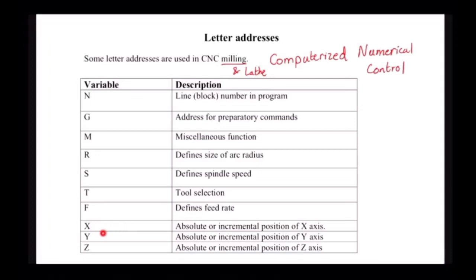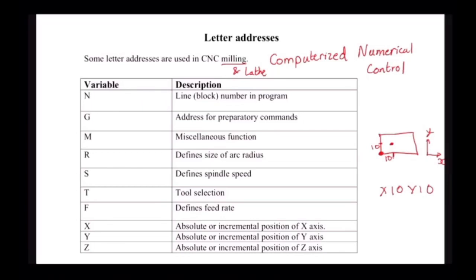The last three commands are X, Y, and Z. This is to change any position in X, any position in Y, and any position in Z. We are using Cartesian coordinates — you just need to mention, if you have a block and this is your origin, if you want to reach a point where this distance is 10 in X and 10 in Y, you will say X10, Y10. It's very simple to define — you just have to specify the coordinates in X and Y. It will be more clear when you see the example.